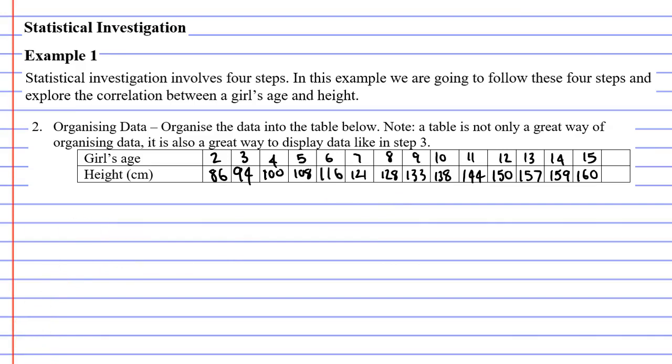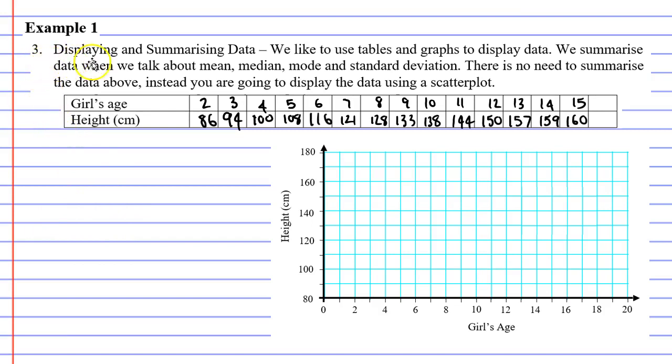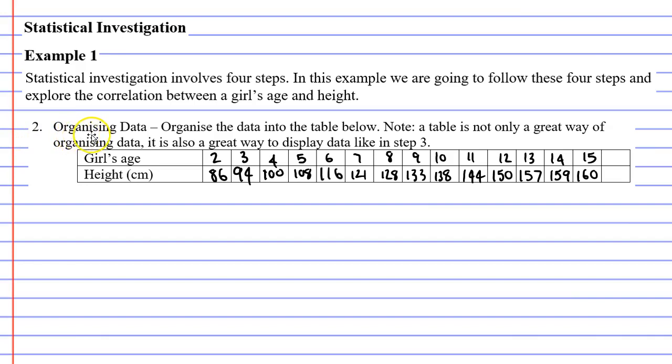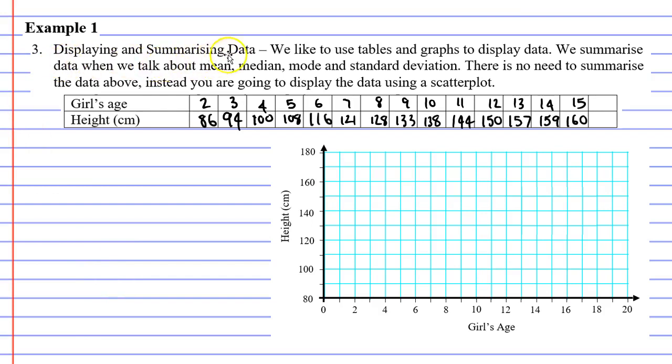All right, we've finished step 2, and we're now going to move on to step 3. Step 3 is all about displaying and summarizing data. So when we display data, we like to use things such as tables and graphs, and we're going to use a graph below. We're going to make a scatter plot. You might also notice that a table is a type of display, which is actually what we did in step 2 when we organized our data. So by organizing it into a table, we're completing step 2 and step 3 all at the same time. It also talks about summarizing data. And when we summarize data, we're talking about calculating things such as mean, median, mode, and standard deviation. Now, there's no need for us to do that with this data. Instead, we're just going to construct the scatter plot.